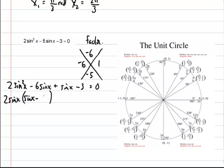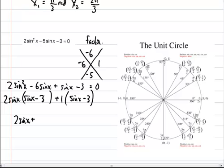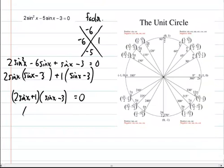I'm going to take out a 2 sine of x, and that will leave behind the sine of x minus 3. Then I'll take out just a 1 from the last one, because there's nothing in common. That's going to be sine of x minus 3. My two factors are going to be 2 sine of x plus 1, and sine of x minus 3. That has to equal 0.